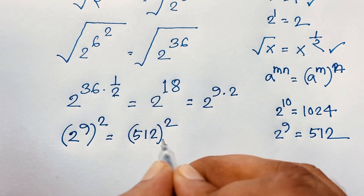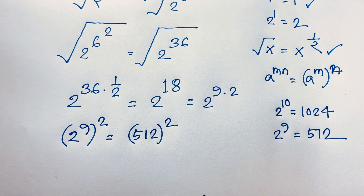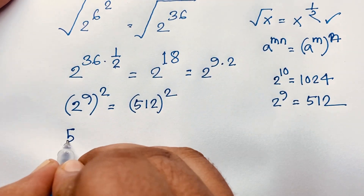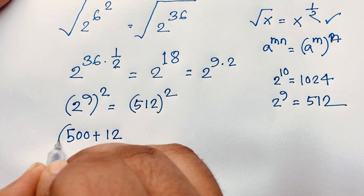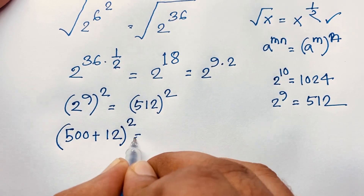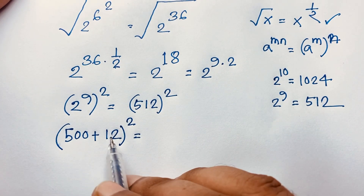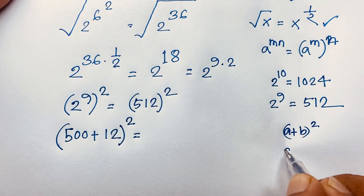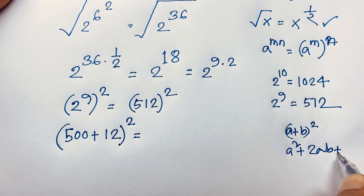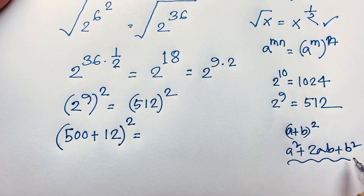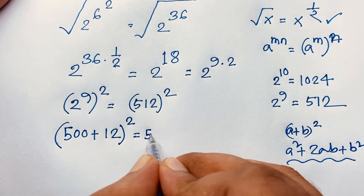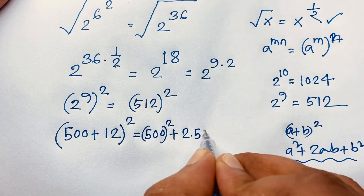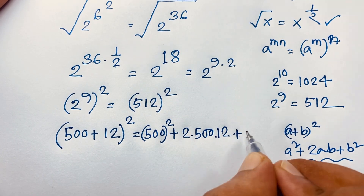So we have 512 squared. How to simplify this? We can write 512 as 500 plus 12 — that is easy maths — and then raise it to the power 2. Now, if a = 500 and b = 12, we know (a + b)² = a² + 2ab + b². So the expression becomes 500² + 2 times 500 times 12 + 12².